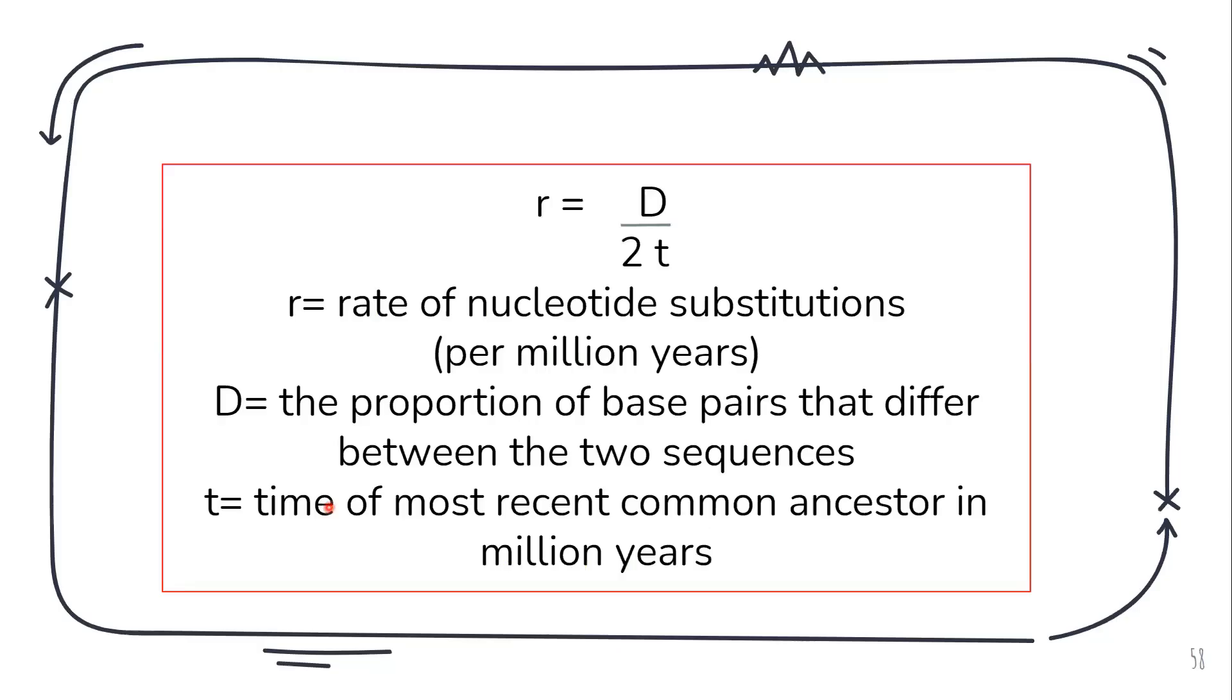Now there is a relationship or a formula and the formula goes as r is equal to d by 2t. What is d here? d is the proportion of base pairs that differ between two sequences.